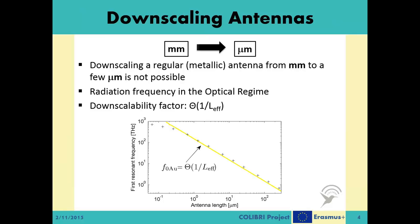Downscaling a classical metallic antenna from mm to a few micrometers is not possible. As the radiation frequency increases, the electromagnetic waves they generate enter the optical regime, where they are usually governed by optics physics. As you see in this figure, the radiation frequency increases proportionally with the reduced size of the antenna.